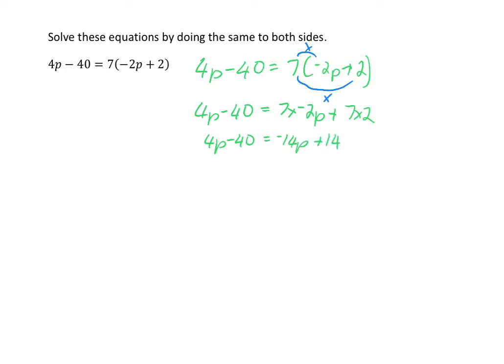Now that I've simplified my original equation, I can collect all of my unknowns onto one side. I've got negative 14p on the right-hand side and 4p on the left-hand side. I want to move that negative 14p across to the left-hand side. To do that, I do the opposite of minus 14p, which is plus 14p — adding it to both sides. So that becomes 4p plus 14p minus 40 is equal to 14.